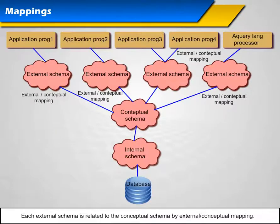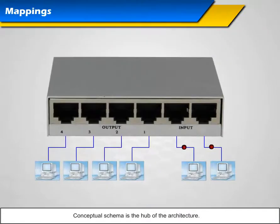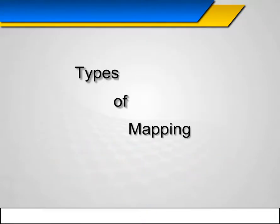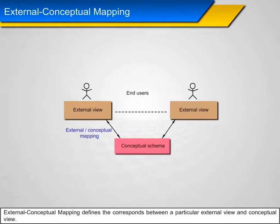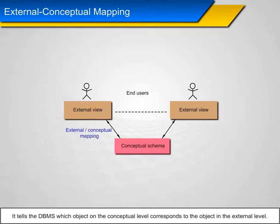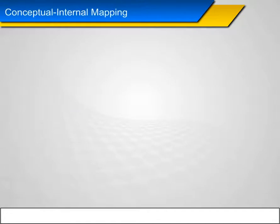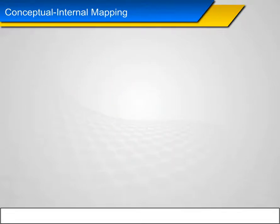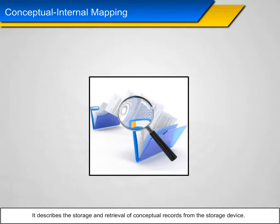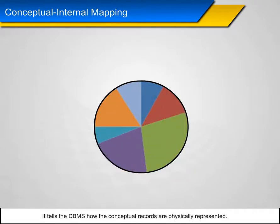The three levels of database architecture are stored in the data dictionary. The data dictionary contains data about data — it contains the actual database descriptions used by the computer. Each external schema is related to the conceptual schema by external-conceptual mapping. The conceptual schema is the hub of the architecture. There are two types of mapping: external-conceptual mapping and conceptual-internal mapping.